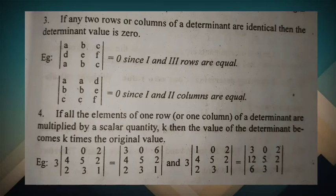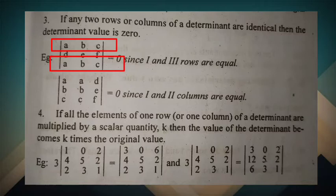Third property: if any two rows or columns of a determinant are identical, then the determinant value is zero. If the elements in two rows or two columns have the same values, then the determinant value calculated will be zero. For example, if the first row elements are a, b, c and the third row elements are also a, b, c, then the determinant value is zero.